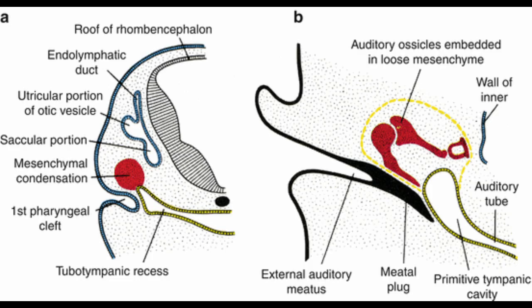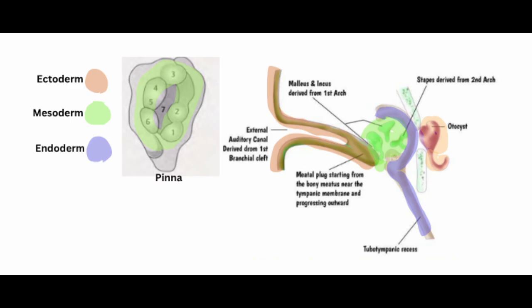In summary, the inner ear, middle ear structures, external auditory canal, and pinna all develop from distinct germ layers. The pinna develops from mesoderm as 6 auricular hillocks fusing. The external auditory canal is ectodermal in origin. The tympanic membrane is derived from all three germinal layers.